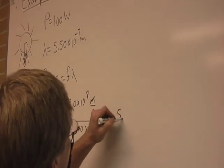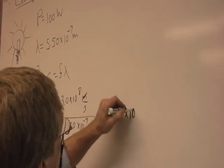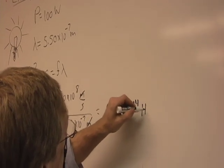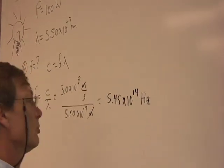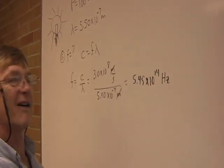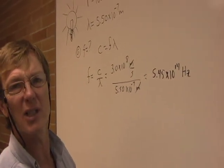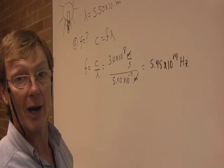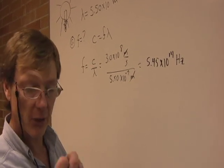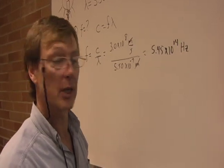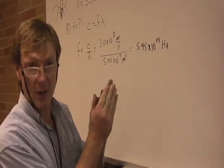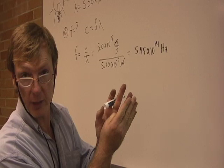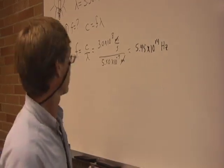So the frequency is 5.45 times 10 to the 14th hertz. So that's 545 trillion cycles per second, the stuff we're seeing. Your eyes are pretty amazing. Something fluctuating that fast, and we can decode it. And we can decode the difference between that and something very close, red light, or something very close, blue light. It's an amazing instrument.